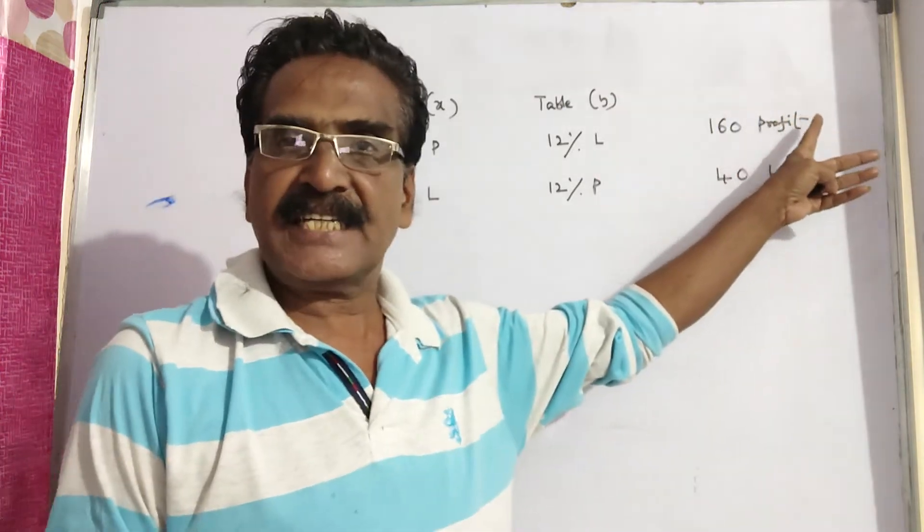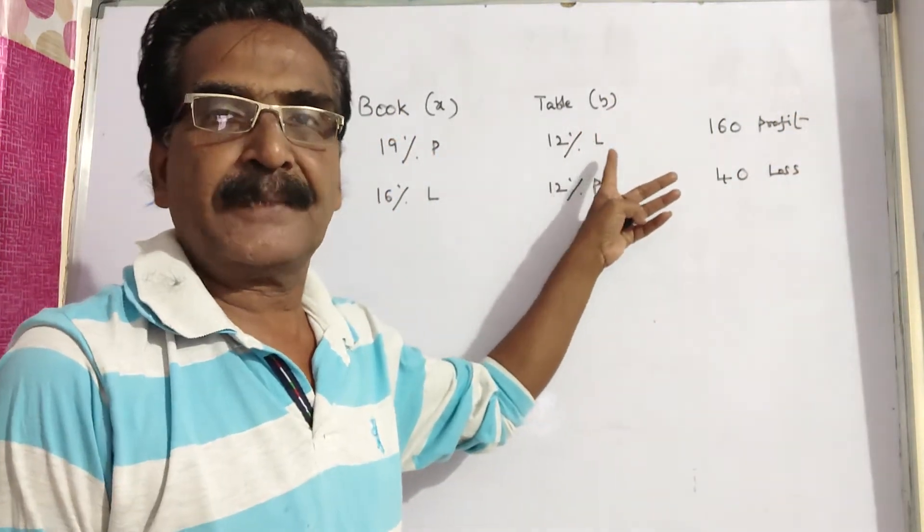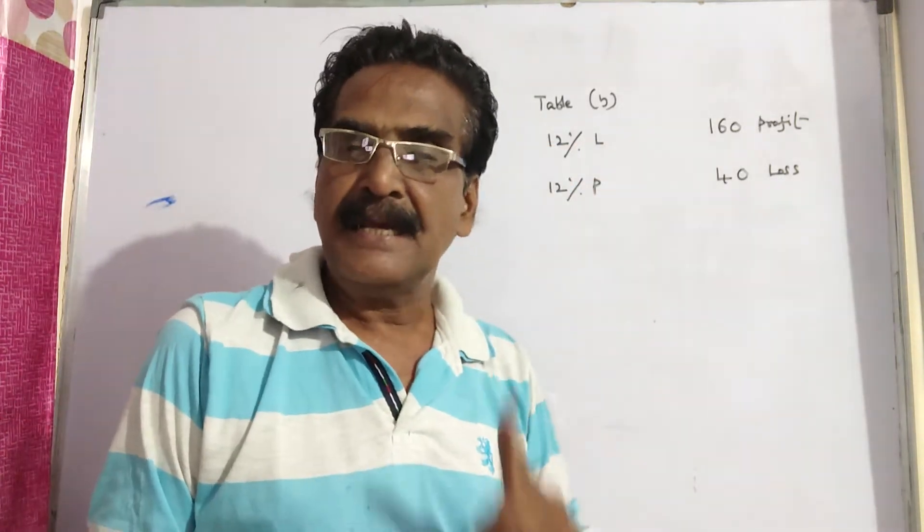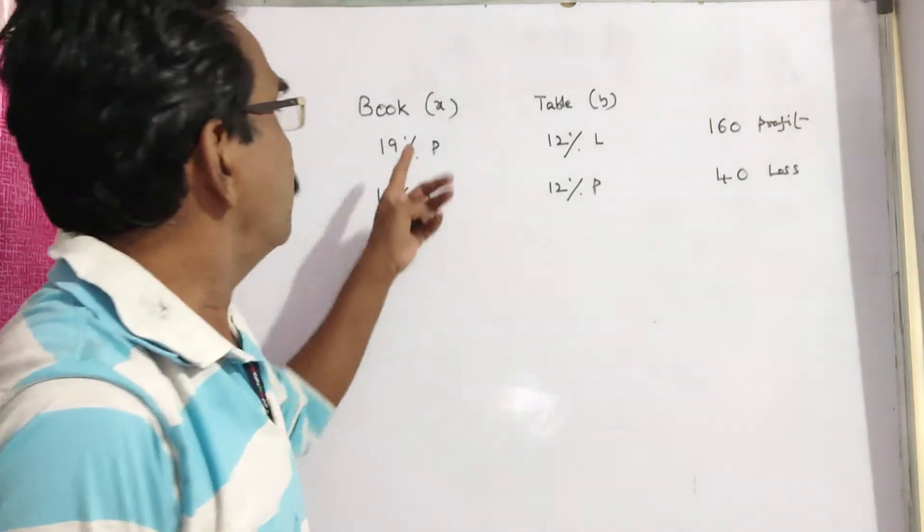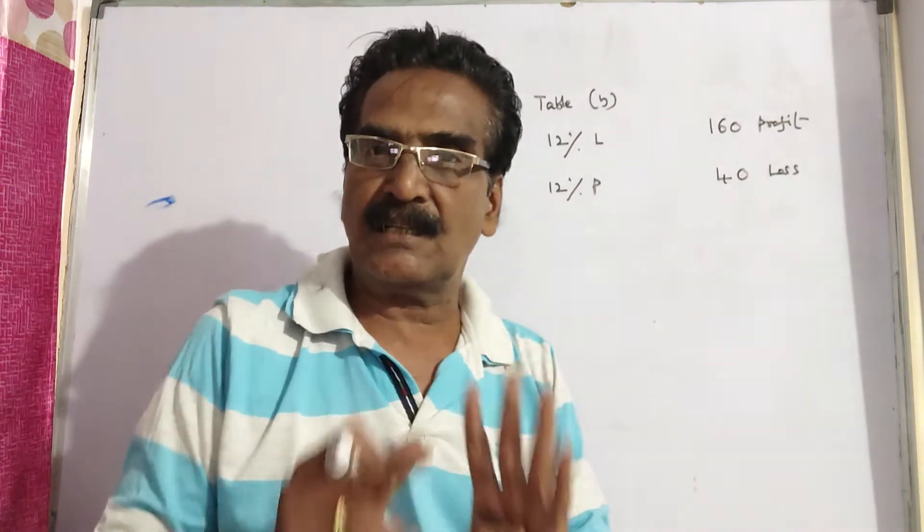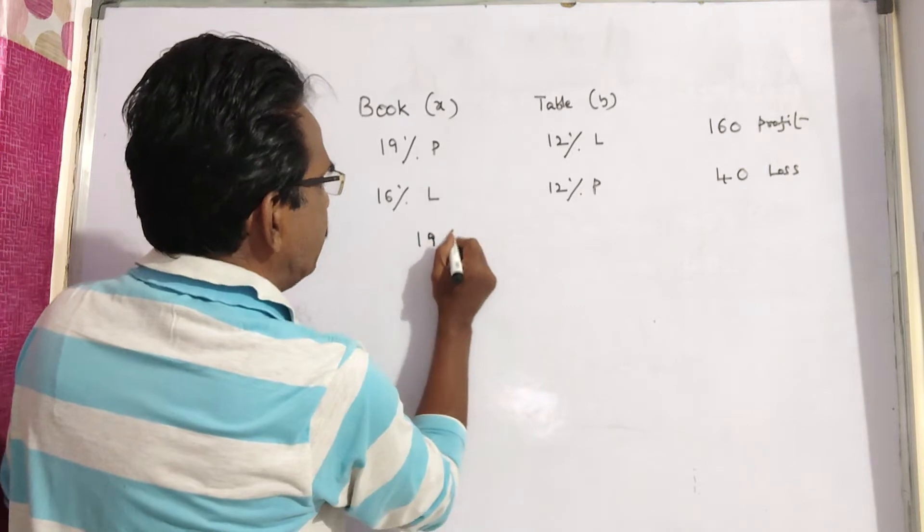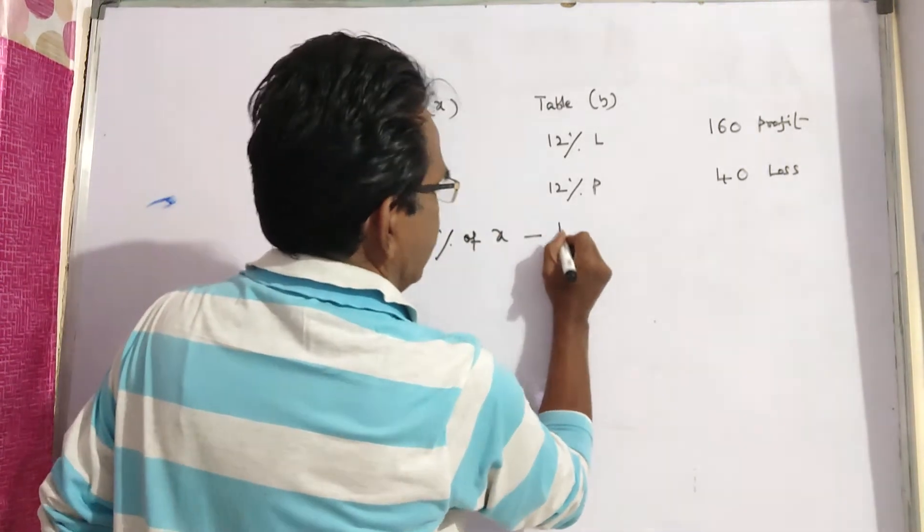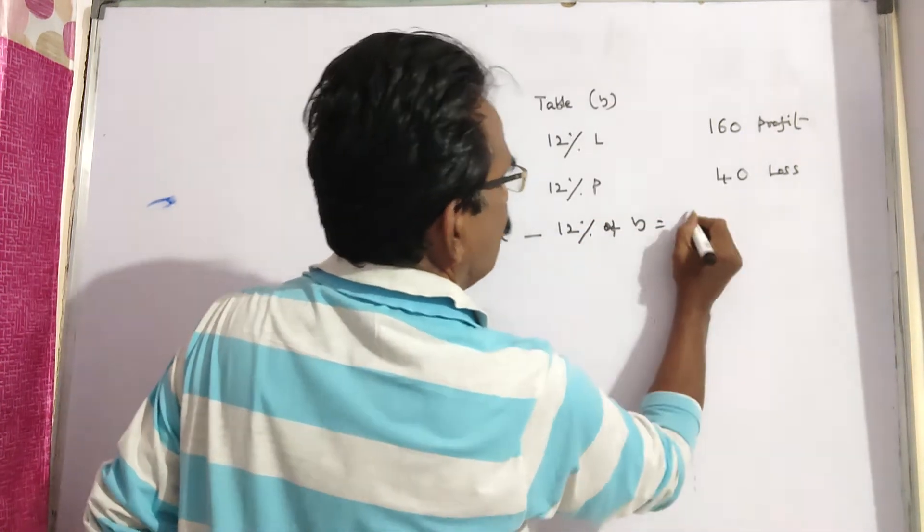In the first case, he sells the table at 12% loss and book at 19% profit and thus makes a net profit of Rs. 160. That means the profit on the book is more than the loss on the table. It implies 19% of X minus 12% of Y is equal to 160.